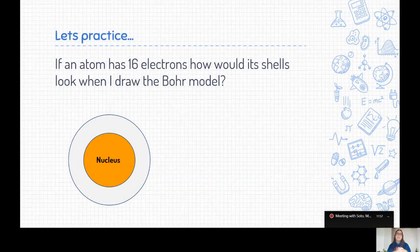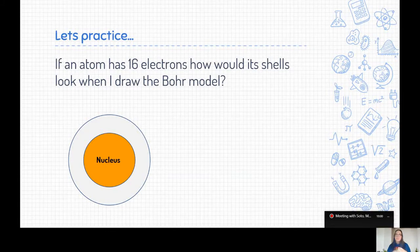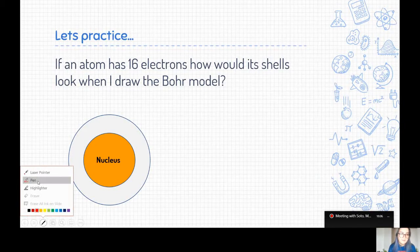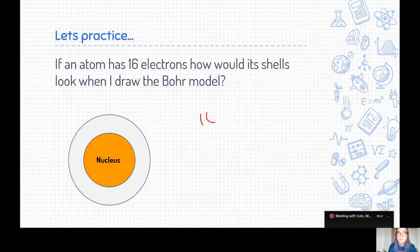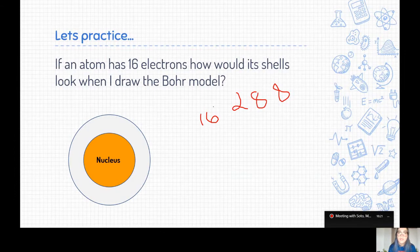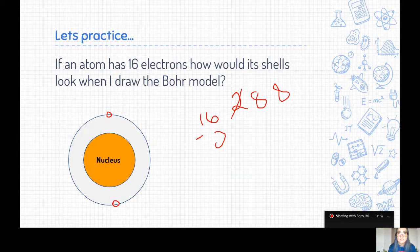So let's do a quick practice problem. If I have an atom with 16 electrons, what would the shells look like if I draw them out? So there's 16 electrons. Go ahead and get a pen. So we have 16 electrons. And we know our rule is the 288 rule. So in this first ring, we are able to fit two electrons. So let's draw our two electrons in the first ring. That maxes out our first ring.